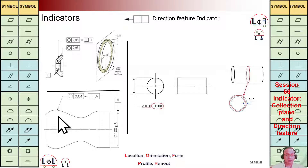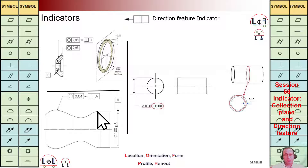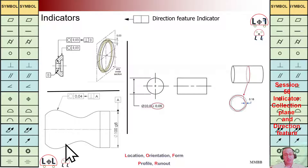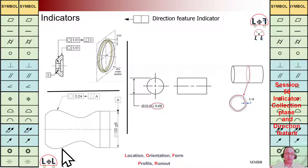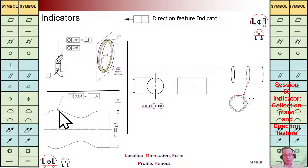Another example here: we have a non-cylindrical shape and then we have circularity perpendicular to A. It means for each cross section perpendicular to A, we are going to have two coaxial circles with a distance of 0.04, and that curve should be in that interval.